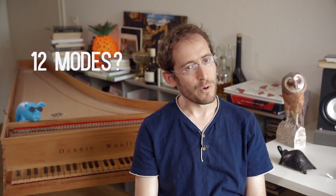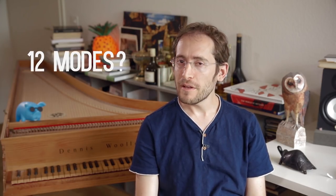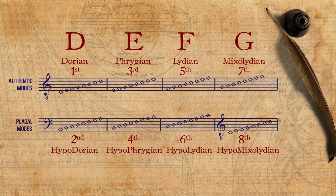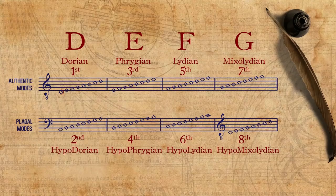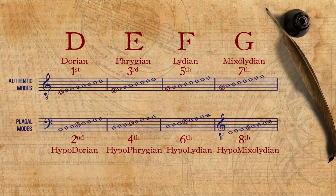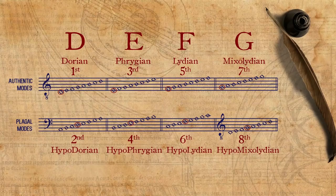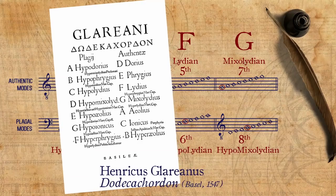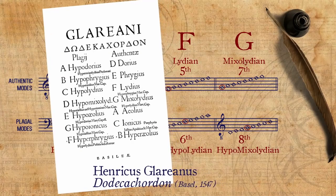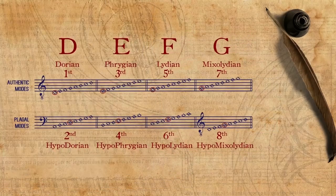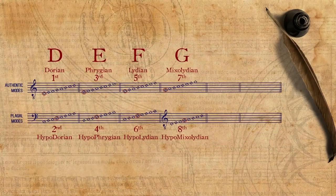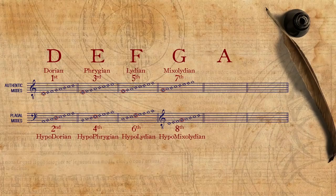We have eight modes, but aren't there actually twelve modes? Well, it depends whom you ask. As we saw, the eight modes are based on four different finalis notes: D, E, F, and G. Glareanus, however, in his 1547 book called Dodecachordon, suggested that there were actually more modes if we considered two more finalis notes, namely A and C.